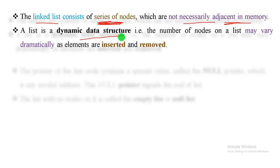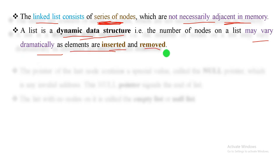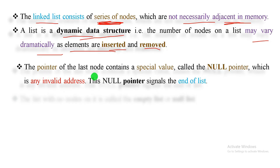Unlike arrays, which are static and cannot shrink or grow, the linked list is dynamic — we can shrink or grow it depending on the number of inputs. The number of nodes on the list may vary dramatically as elements are inserted. The pointer of the last node contains a special value — the null pointer — which indicates the end of the list.